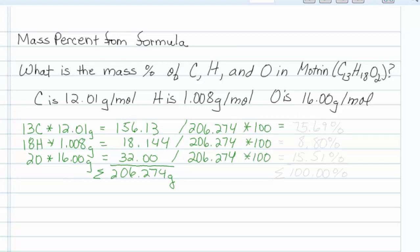So 156 out of 206 is 75.69 percent. 18 divided by this value is 8 point, and I'm just going to report these to the hundredths, 80 percent, and this one would be 15.51 percent.